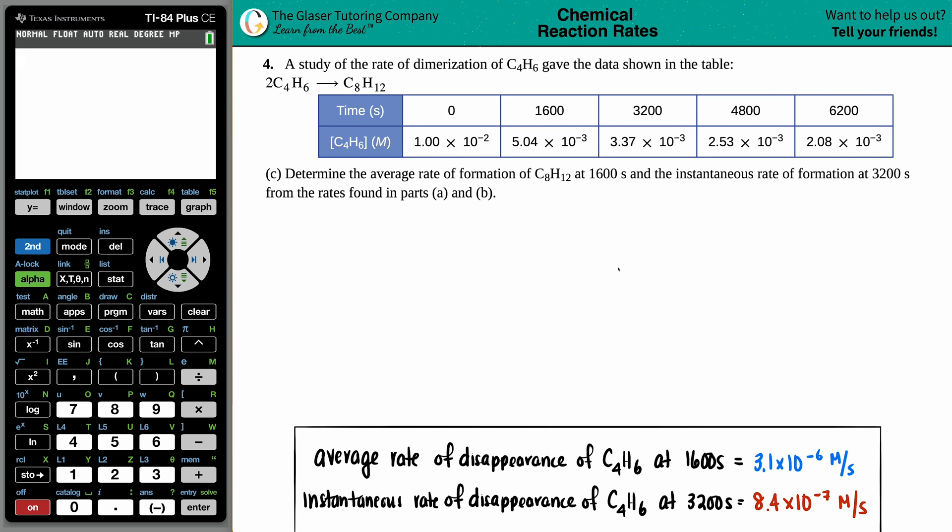Number four: A study of the rate of dimerization of C4H6 gave the data shown in this table, and they give us a balanced equation: 2 C4H6 which will yield C8H12.